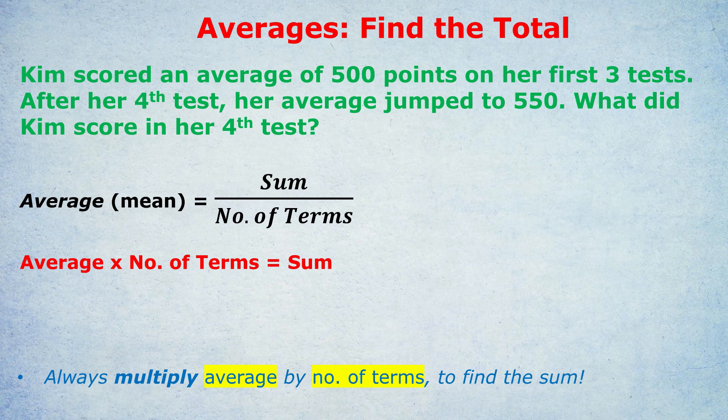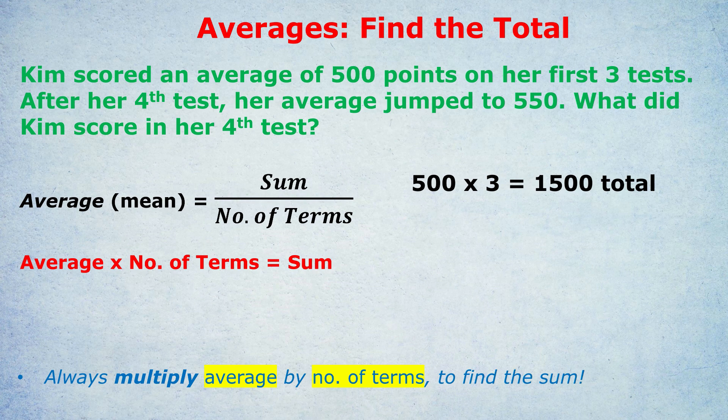No need for a complex formula, we're just going to multiply the average by the number of terms. Kim had an average of 500 points and that's across three tests. So we multiply 500 by three to find her total number of points, the sum of her points of those three tests, 1500.